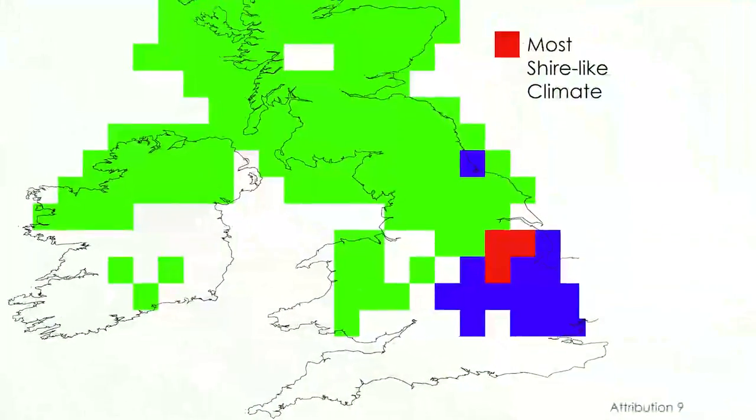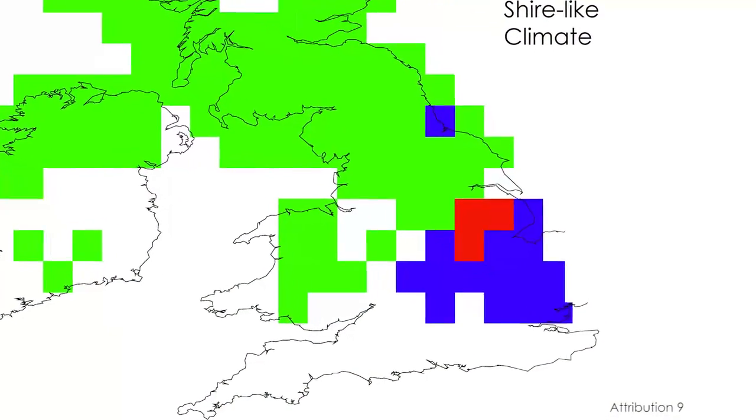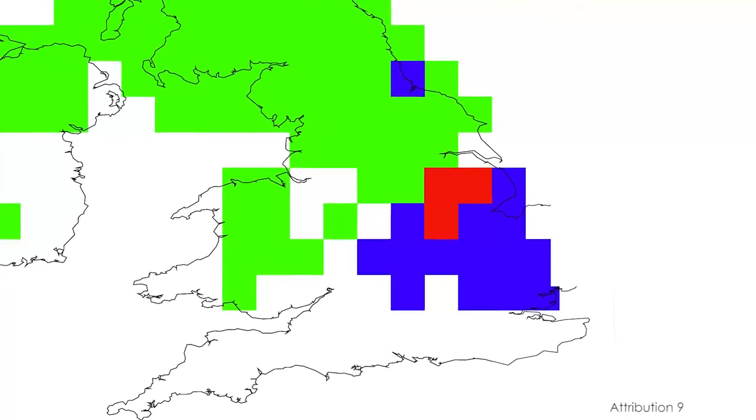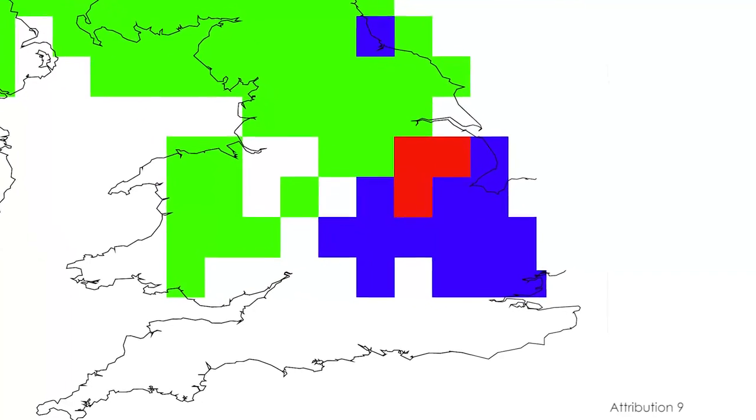So he was out by a few hundred miles, maybe. Apparently Tolkien envisaged the Shire as being similar to parts of the UK. And in fact, we found that Leicestershire and Nottinghamshire do have a very similar climate to that of the Shire, if you believe the climate model.